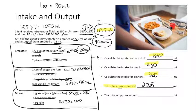Always double check your addition — recalculate 1,135 plus 120 plus 450 plus 360 to confirm 2,065 mLs. For total output, it is 800 mLs as calculated earlier. The meal menu doesn't contribute to output unless the patient vomited or had other fluid losses.